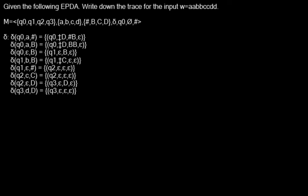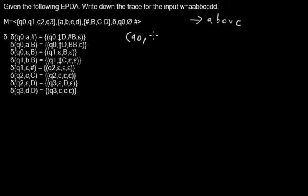I want to show you how an embedded pushdown automaton processes an input string. We will start with our configuration in our initial state q0. We have a symbol that looks somewhat like a double cross — this is the border of our stacks, because this automaton can have several stacks. We start with a stack where we have our bottom symbol on it, then an empty string for the part of the input we've already read. Right now we haven't read anything, and here is what's left to read — at this moment it's the whole input string.